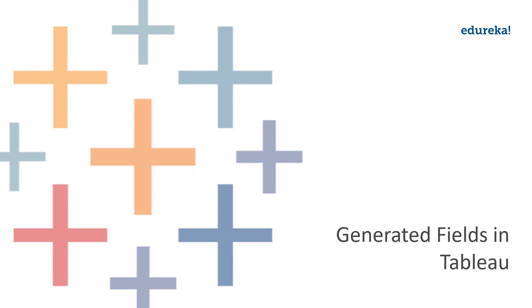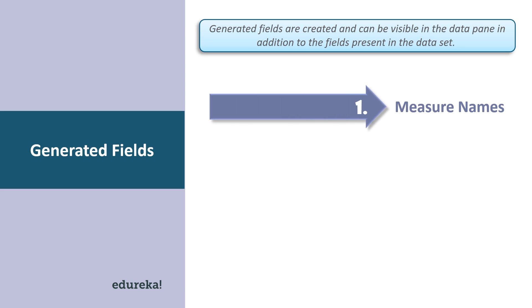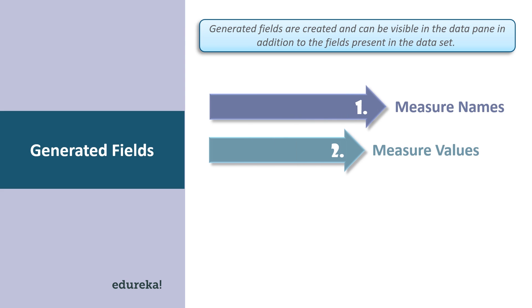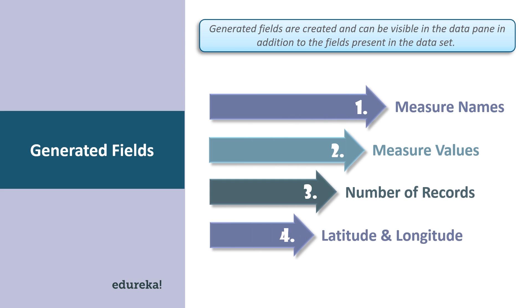Tableau generates some fields which can be visible in the data pane. These fields are generated in addition to the fields that are present in the data set. The generated fields are measure names, measure values, the number of records, and latitude and longitude.